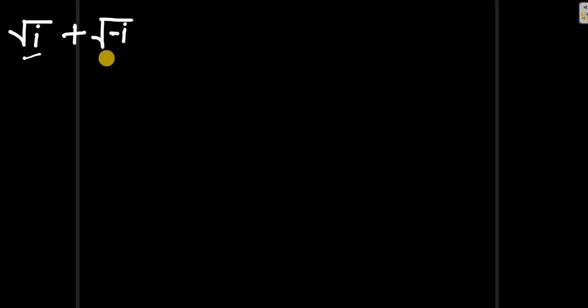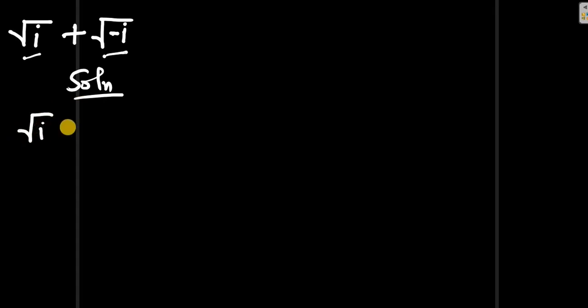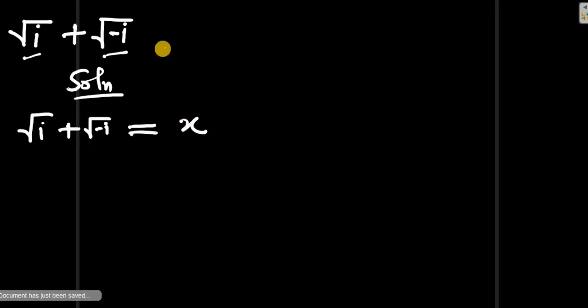Hello, in this video we are going to find the value of √i + √(-i). We can start by equating √i + √(-i) to a variable x. This is Method 1.